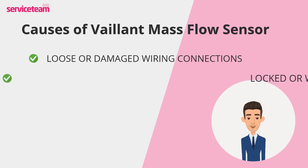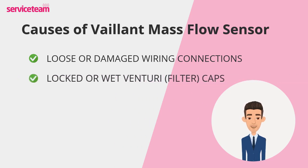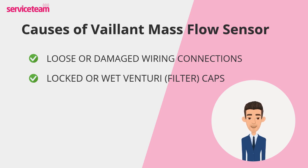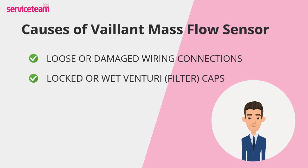The next cause is blocked or wet filter caps. The venturi filter cap regulates airflow to the sensor. Dirt, debris, or moisture can block the airflow, leading to incorrect sensor readings. This type of blockage usually causes an F53 error code — a sensor functionality problem — and can affect combustion efficiency.